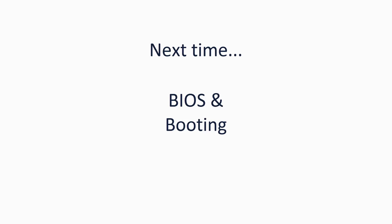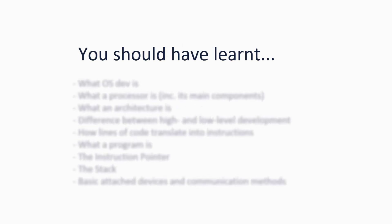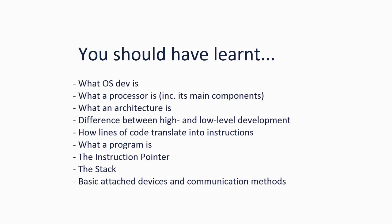We'll look in more detail next time at the BIOS and how a computer boots. For now, make sure you've absorbed what I've shown you this time, then move on when you think you're ready. You should know now what OS Dev is, what a processor is including its main components, what an architecture is, the difference between high and low-level development, a basic understanding of how lines of code translate into instructions, what a program is, how a processor keeps track of its location in a program, how programs keep track of temporary variables and parameters, and basic devices that are attached to the processor and ways of communicating with them.